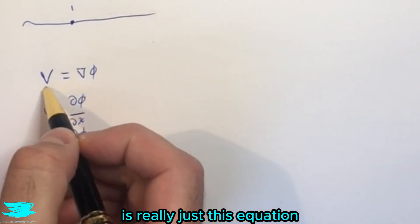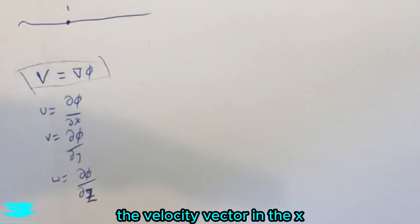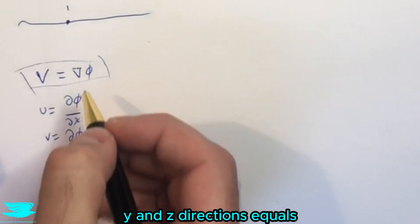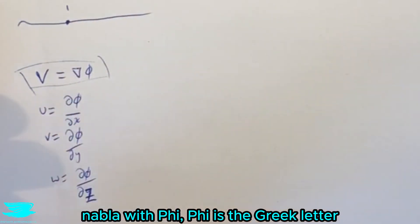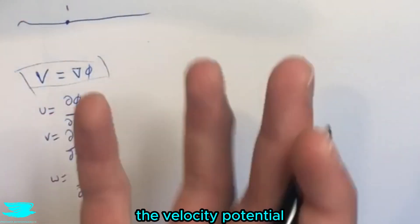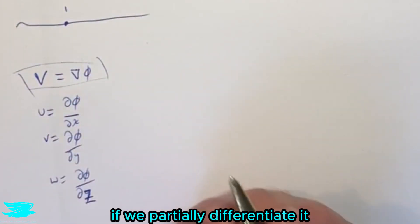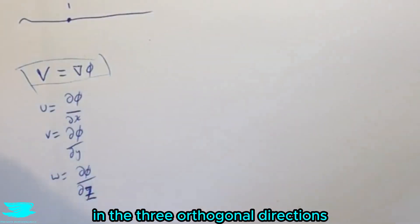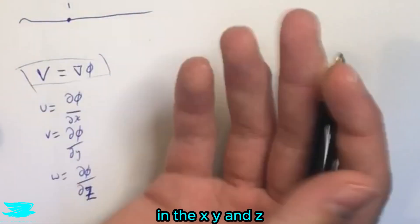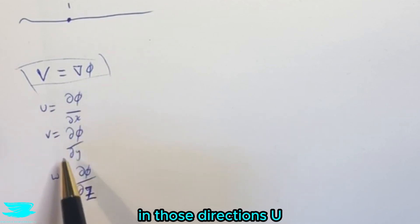And the velocity potential is really just this equation here. The velocity vector in the x, y, and z directions equals Nabla phi. Phi is the Greek letter which represents the velocity potential. So what this means is from phi, if we partially differentiate it in the three orthogonal directions x, y, and z, we can then get the velocities in those directions u, v, and w.